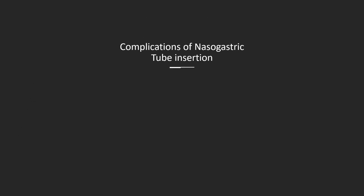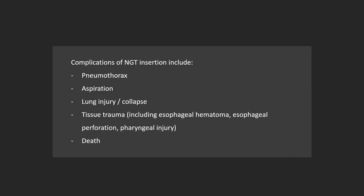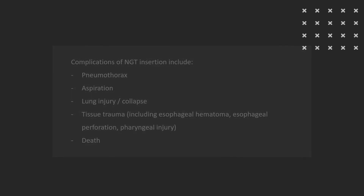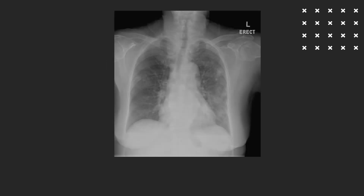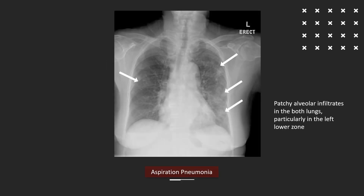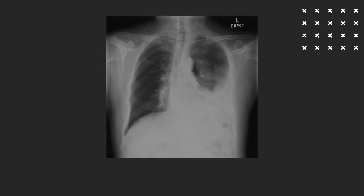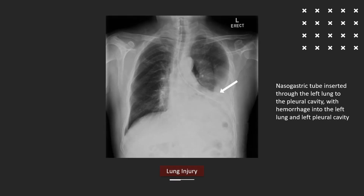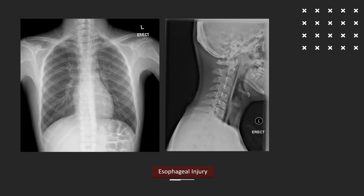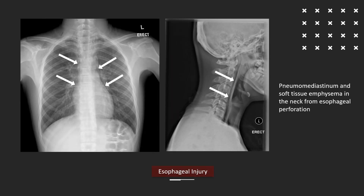Complications of nasogastric tube insertion include pneumothorax, aspiration pneumonia, or lung injury. Pharyngeal or esophageal injury can also occur, which uncommonly takes the form of esophageal hematoma or esophageal perforation.